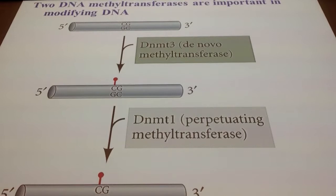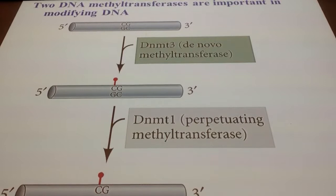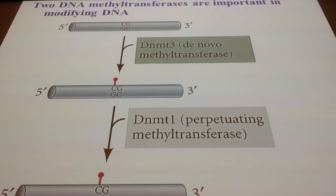There are two different types of DNA methyltransferases. Methyltransferase is the enzyme that adds methyl groups — it carries out methylation. There are two types: one is called the de novo methyltransferase, and the other is perpetuating methyltransferase. De novo means new, from scratch. Perpetuating means it continues. Whenever you see this, remember the perpetuating correlates with memory — it continues.